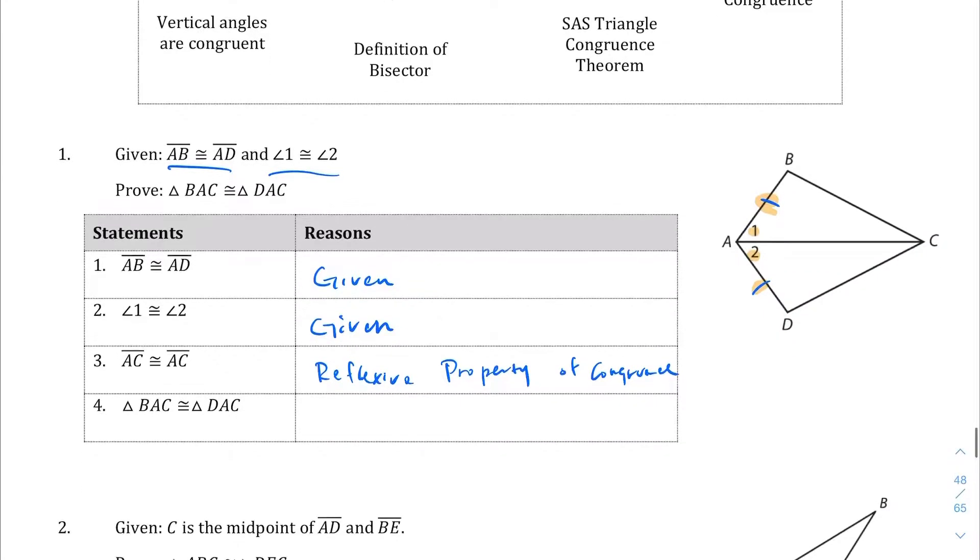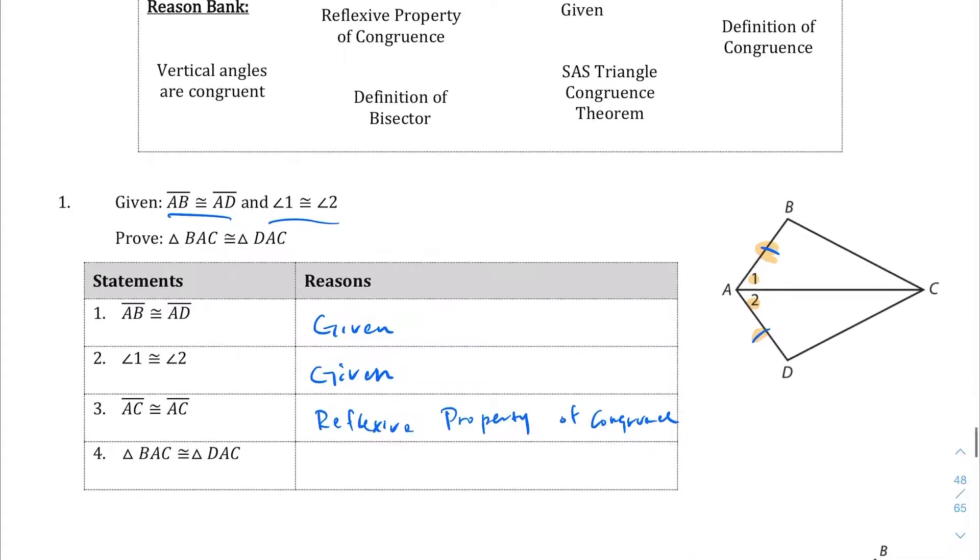And then lastly, triangle BAC is congruent to triangle DAC. That's our concluding statement, which is side angle side triangle congruence theorem. Since that's what we proved. The side. We have a side. We have angle. And we have a side.